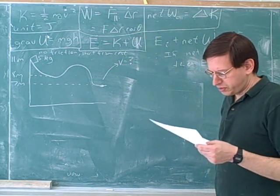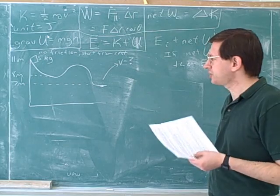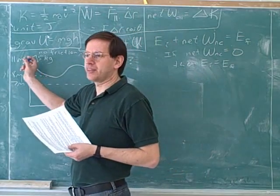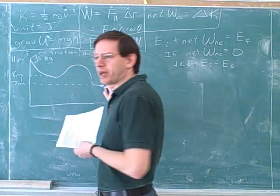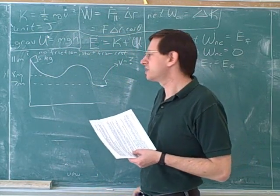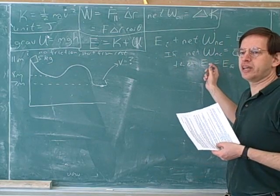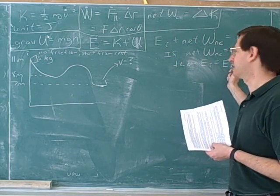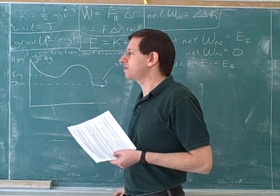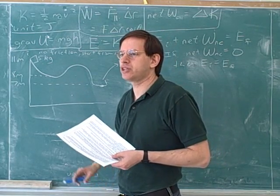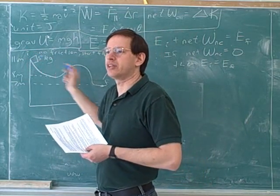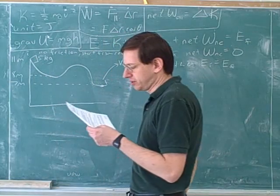Step one: identify and label the initial and final points of the interval that you're thinking about. In this case, we're starting at this initial point and we're going to end up at this final point. This is a step that people unfortunately skip a lot, but it's important. Notice that there's no way we can use this equation unless we know what the initial point is and what the final point is, because that's built into the equation.